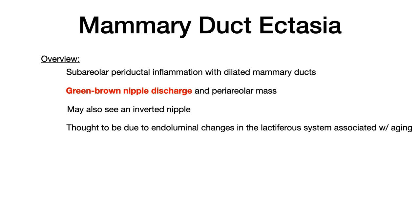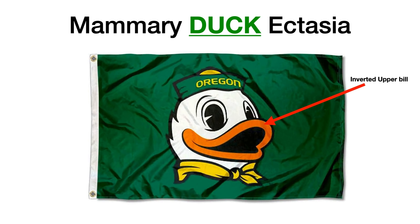My mnemonic to remember mammary duct ectasia is the Oregon Ducks. Their logo tells me a couple of things: one, that greenish, brownish, orangish color — green is their main color — which is the color of the discharge. And the bill of the duck up top, if I think of it as inverted, reminds me that if I see the word inverted nipple in the vignette, I should also think of mammary duct ectasia. So the Oregon Duck gives you the colors of the discharge and reminds you of an inverted nipple.